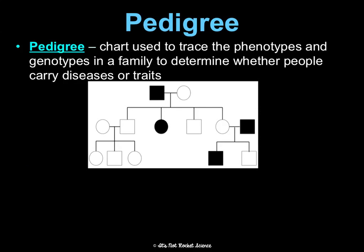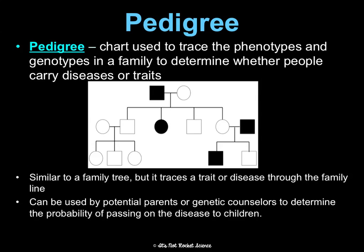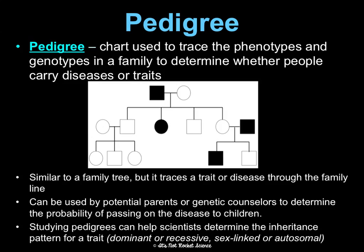A pedigree is a tool or chart used to trace phenotypes and genotypes in a family to determine whether people carry diseases or traits and to see inheritance patterns. They're like family trees, but they trace a specific disease or trait. They can be used by potential parents or genetic counselors to determine the probability of passing on a disease, and studying pedigrees can help scientists determine whether a trait is dominant, recessive, sex-linked, or autosomal.